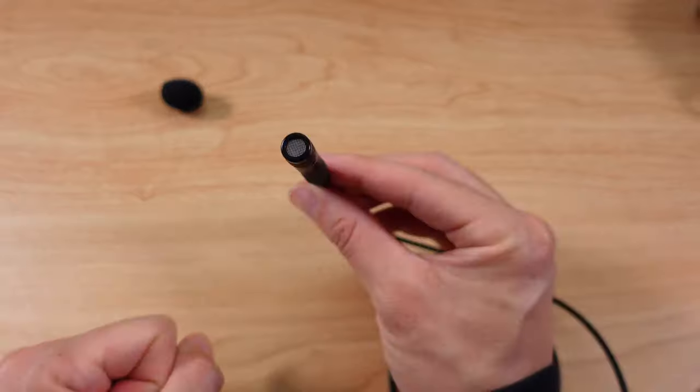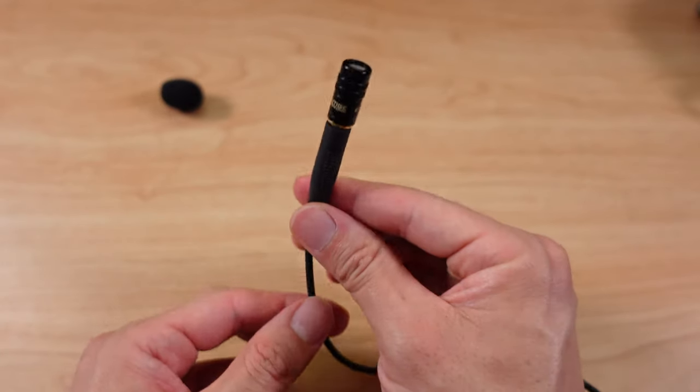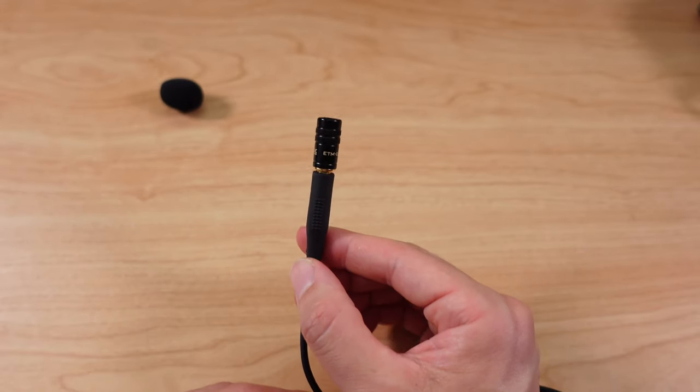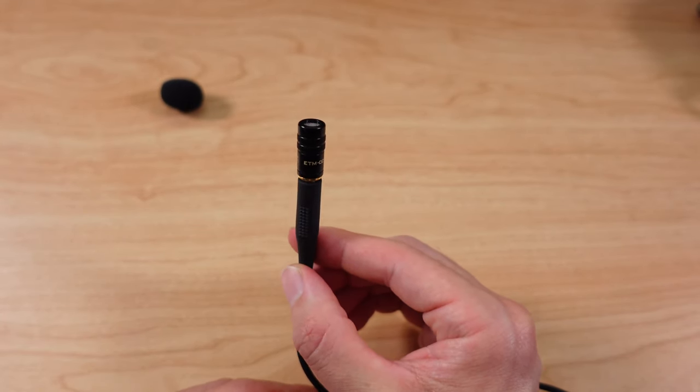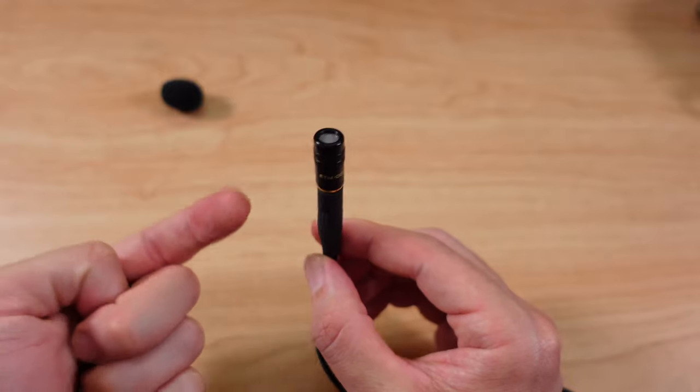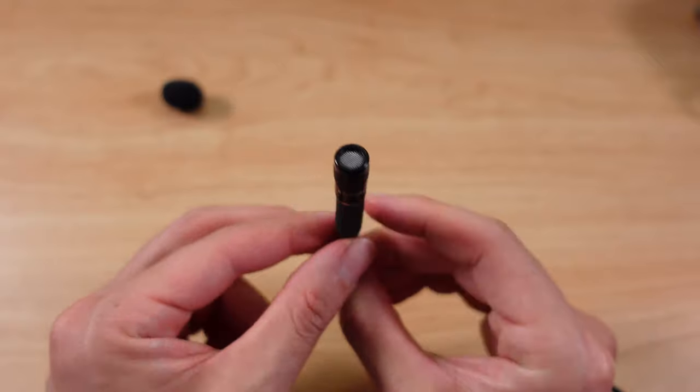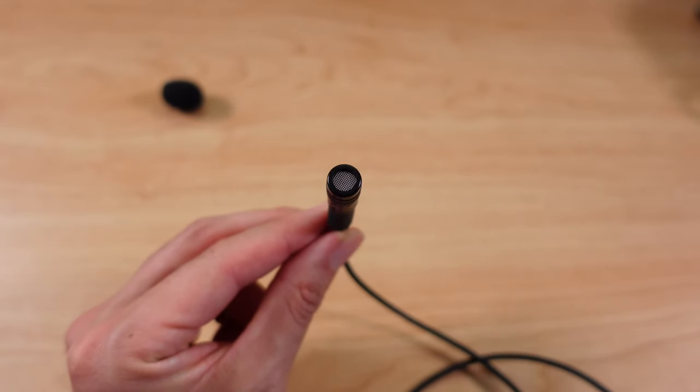I have the Edutige connected to this cable here, it's just a standard 3.5 millimeter extension cable, and I'm plugging this directly into the camera. I had to dial down the audio but I still think it's clipping, so I'm going to go into my audio settings right now.